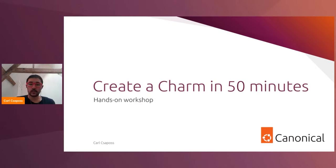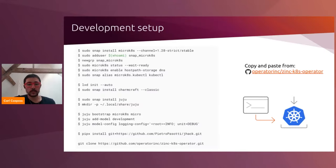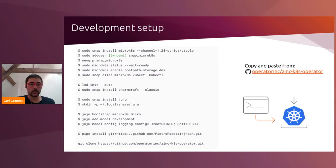We'll start with a brief introduction of Juju and charms, and then we'll dive into the hands-on section of the workshop. For the hands-on section, you'll want to have some software installed. It might take a few minutes to download, so if you run these commands now, hopefully by the time we get to the hands-on section you'll be ready to go. We've created a GitHub repository for today. The link is in the chat and description. The repository contains a README with these commands, so you can copy and paste directly from the README.